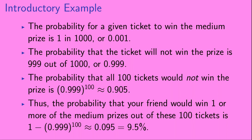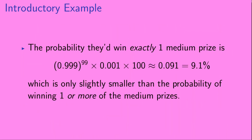That is approximately 0.095, or 9.5 percent. The probability that they would win exactly one medium prize is the probability of losing on 99 tickets times the probability of winning on one ticket times the number of combinations in which that can happen. So that's 0.999 raised to the 99th power times 0.001 times 100 tickets, which is about 9.1 percent. This is only slightly smaller than the probability of winning one or more of the medium prizes.